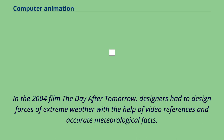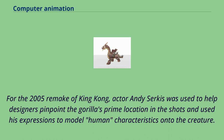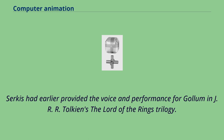In the 2004 film The Day After Tomorrow, designers had to design forces of extreme weather with the help of video references and accurate meteorological facts. For the 2005 remake of King Kong, actor Andy Serkis was used to help designers pinpoint the gorilla's prime location in the shots and used his expressions to model human characteristics onto the creature. Serkis had earlier provided the voice and performance for Gollum in J.R.R. Tolkien's The Lord of the Rings trilogy.